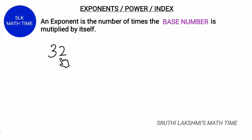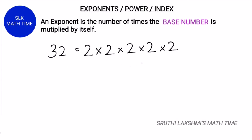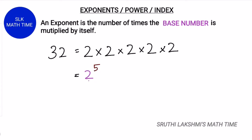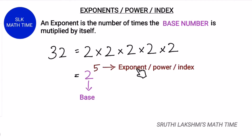For example, 32 is 2 x 2 x 2 x 2 x 2. Instead of writing the factor 2 five times, we can simply write it as 2 to the power 5. Here, 2 is the base and 5 is the exponent.